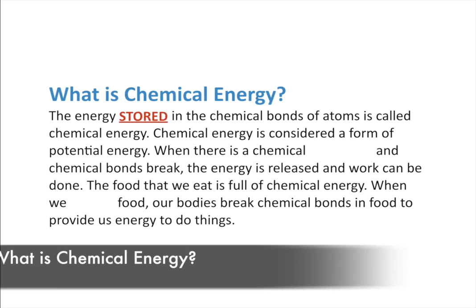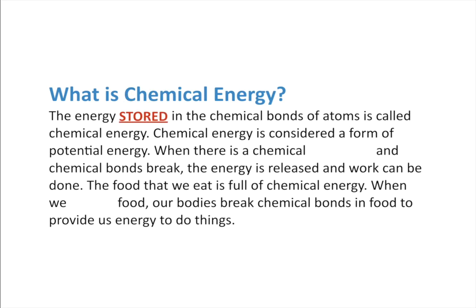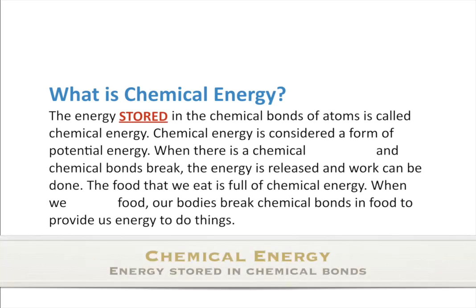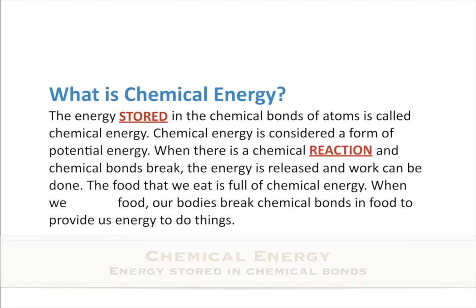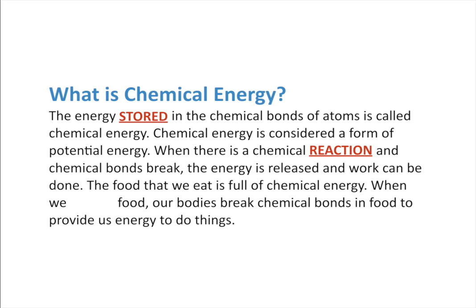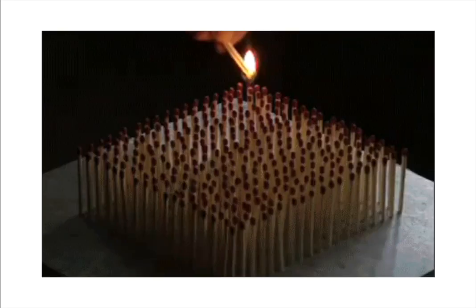The energy stored in the chemical bonds of atoms is called chemical energy. Chemical energy is considered a form of potential energy because it's stored — it's waiting to be used. When there's a chemical reaction and the chemical bonds break, the energy is released and work can then be done, because the chemical energy changes into something else. The food that we eat is full of chemical energy.